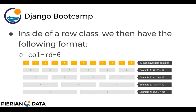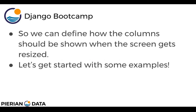So for example, we have a call like col-md-6. That basically says when the screen size is of a medium screen size — and there are actual pixel amounts to quantitatively define what a medium screen size is — I want whatever's in this container to take up 6 columns, or half of the available screen. So we can define how the columns should be shown when the screen gets resized, and those are basically known as breakpoints. Let's get started with some examples.